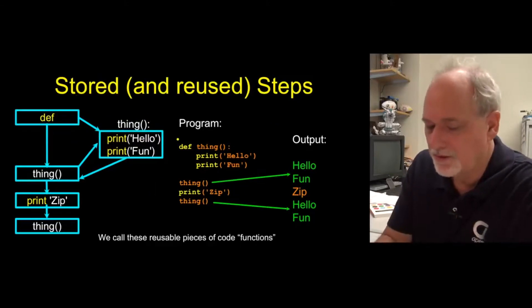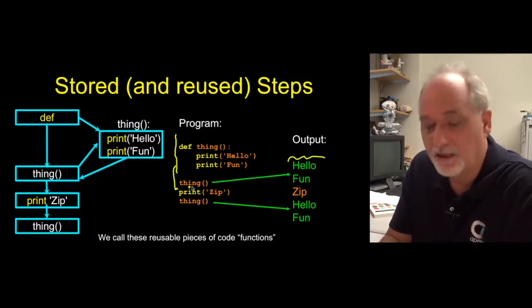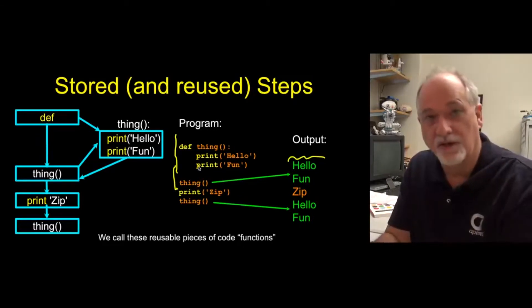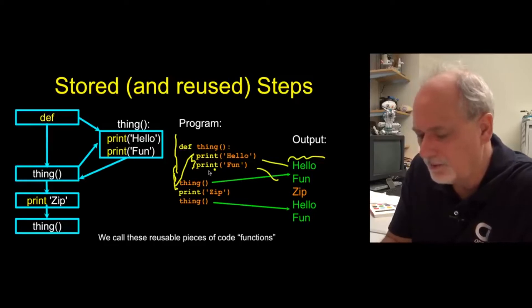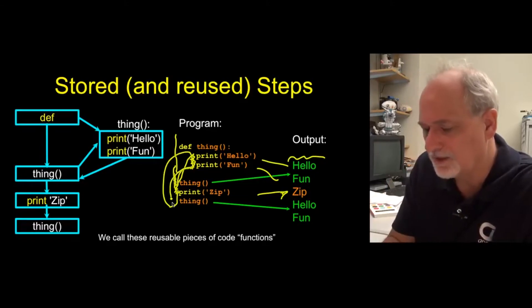So this doesn't do anything. There's no output here from that stuff right there. But then what happens is you invoke it. And this thing looks like it's part of Python, but you effectively extended Python with your def statement. And so when it sees thing, it goes up and runs your code. And so out comes hello fun. And then it comes back and goes to the next line. Does print. So print comes out. And then it goes back and this is the reuse part. We get to reuse it. We define it once and we use it twice.